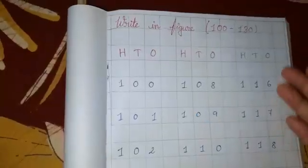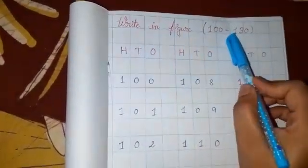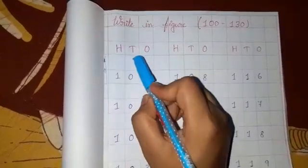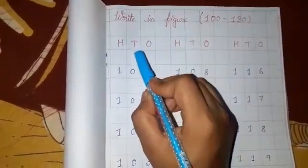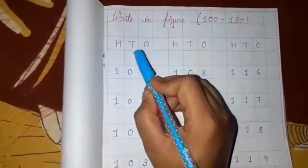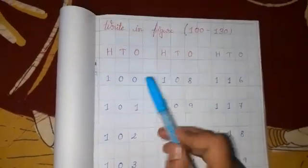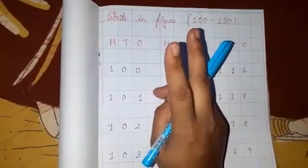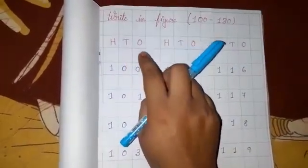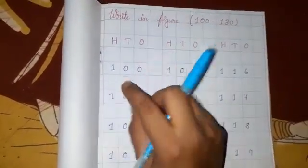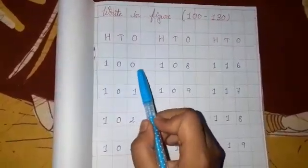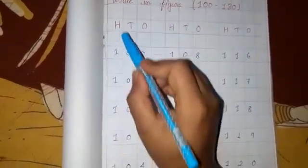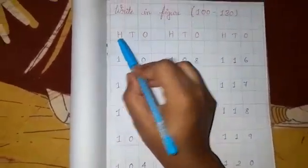Now as you can see, I have written the heading here. Then I have written H T O, that means hundreds, tens, and ones. When there is one number, we write it under O. When there is two numbers like 10, we write it under T and O. And when there are three numbers, see one, two, three, like 100, then we write it under H, hundreds, tens, and ones.